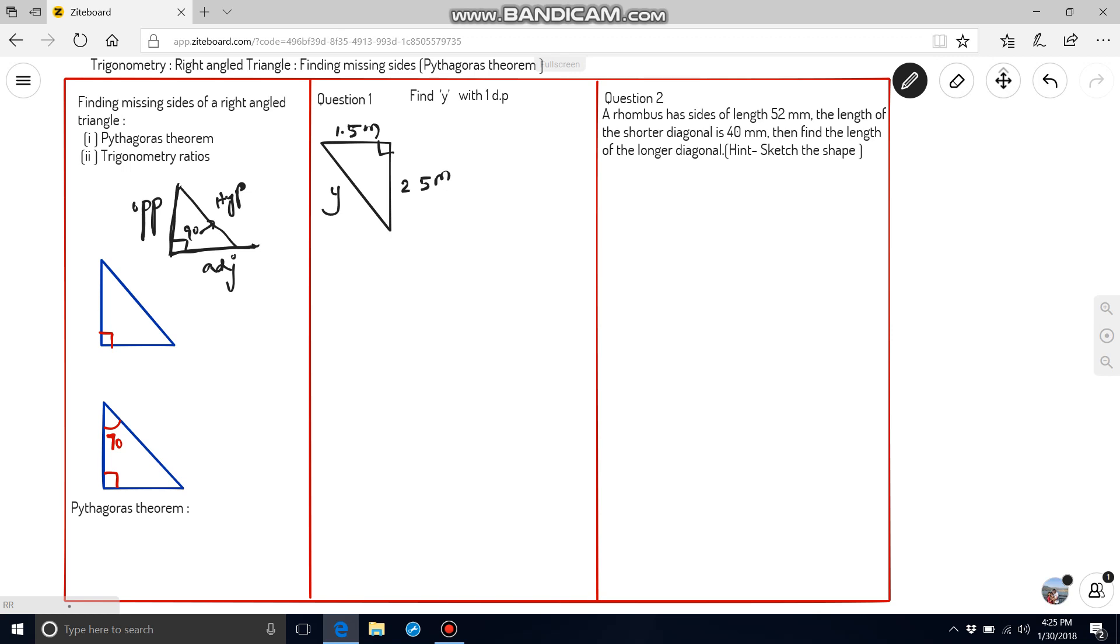Here we have two diagrams. In diagram 1, we have only 90 degree. There is no other angle given. So, we can easily say 90 degree opposite is hypotenuse and the horizontal line is adjacent and the vertical line is opposite side.